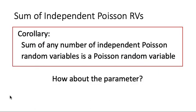We have an easy corollary: the sum of any number of independent Poisson random variables is also a Poisson random variable. This follows because the sum of any two Poisson variables is Poisson, and adding a third is again the sum of two Poisson variables, and so on.